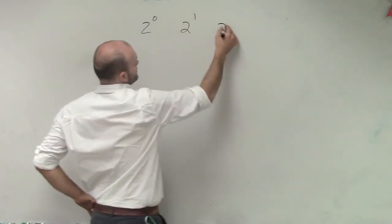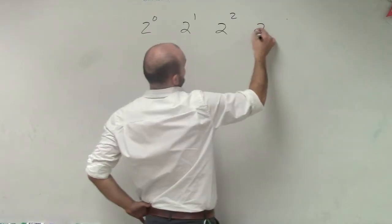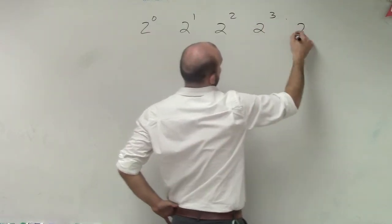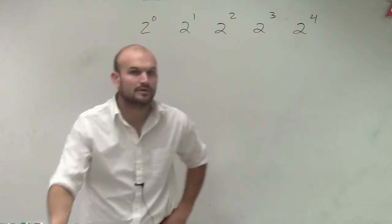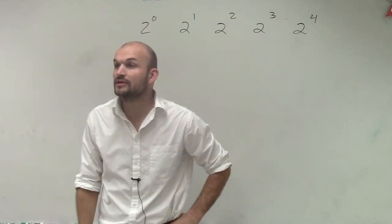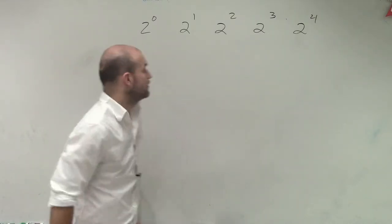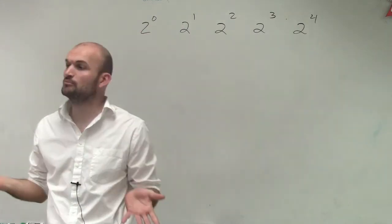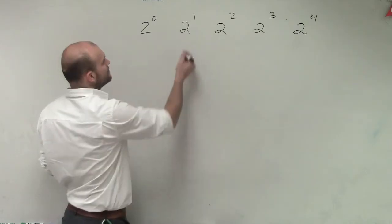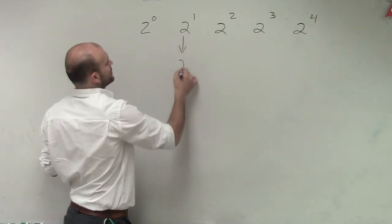We have 2 to the first, 2 to the second, 2 to the third, and 2 to the fourth. We've been working on these for a while and we've practiced these. 2 to the first power means 2 multiplied by itself one time, so that answer is going to be 2.